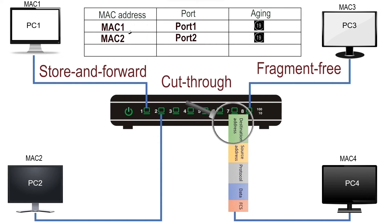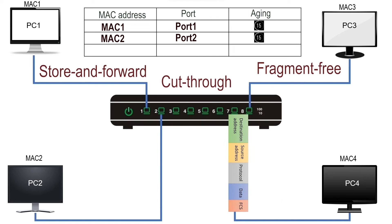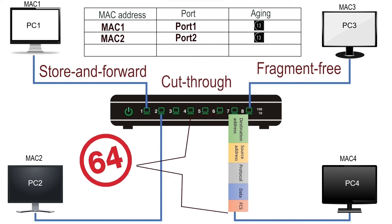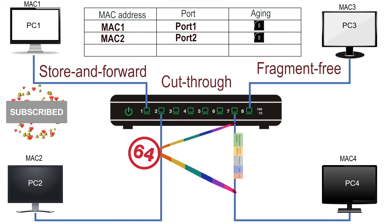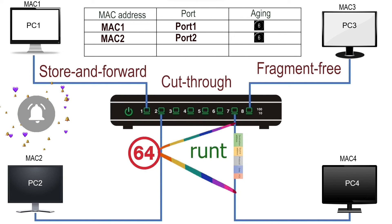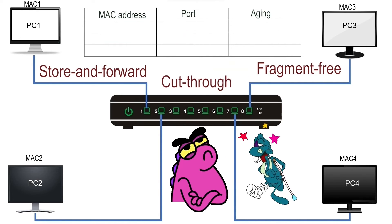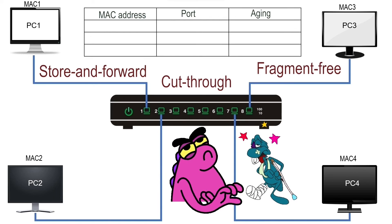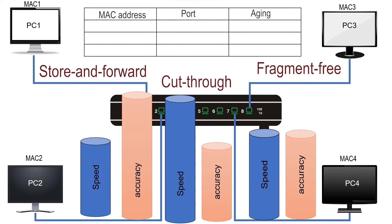In the fragment-free method, after determining the forwarding port, the switch waits until the first 64 bytes of the frame are received. The 64-byte minimum is the legal size of an Ethernet frame — any frame smaller than 64 bytes is called a runt frame and is considered corrupt. This method is a modified version of the cut-through method and reduces the number of runt frames being switched. Compared to the other two methods, it provides moderate speed and accuracy.